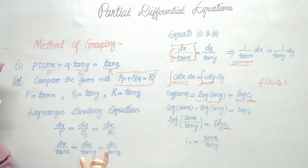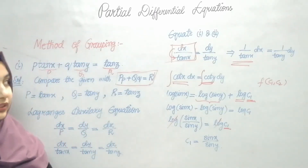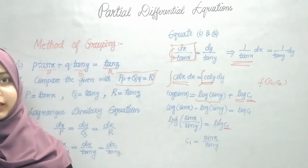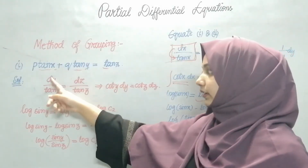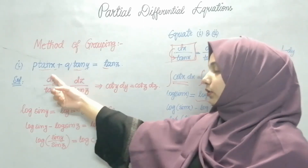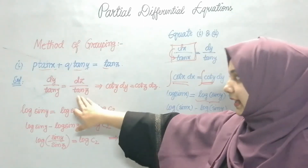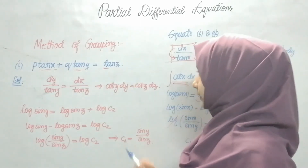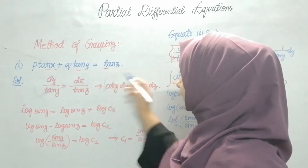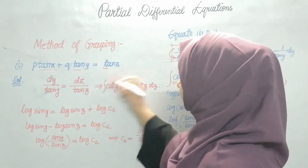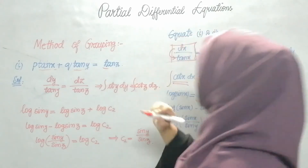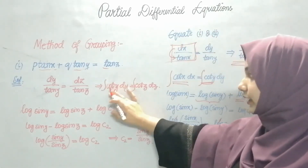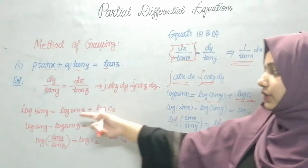Now Step 2: I take dy and dz — the next two members. dy/tan y = dz/tan z, which gives cot y · dy = cot z · dz. Integrating both sides: the integration of cot y is log(sin y) and the integration of cot z is log(sin z). I write the constant as log C2 since I have logs on both sides.